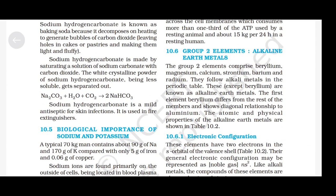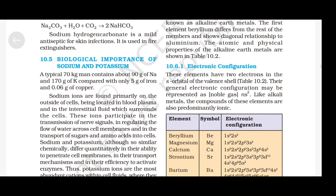Group 2 elements — alkaline earth metals: comprising beryllium, magnesium, calcium, strontium, barium and radium. These, except beryllium, are known as alkaline earth metals. Beryllium differs from the rest and shows diagonal relationship to aluminium. Electronic configuration: these elements have two electrons in the s-orbital of the valence shell; general configuration is [noble gas] ns². Beryllium: 1s², 2s² — refer to the table for full configurations.